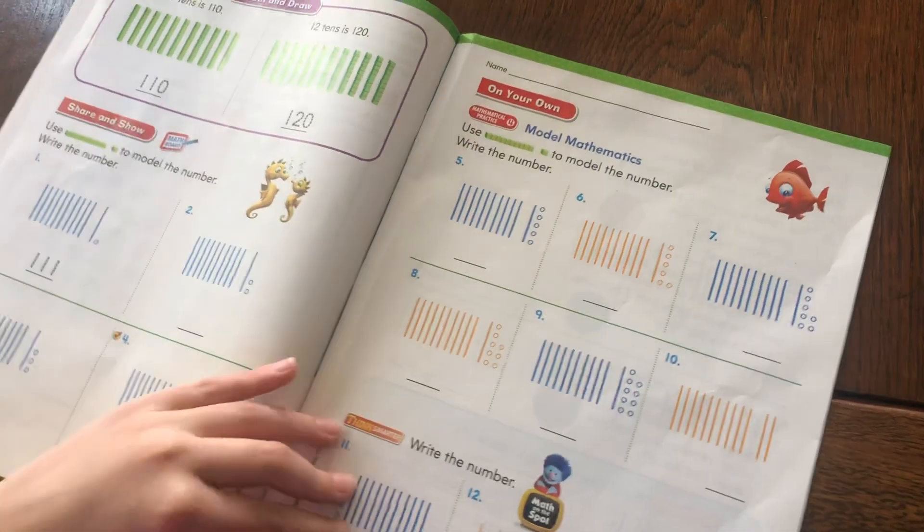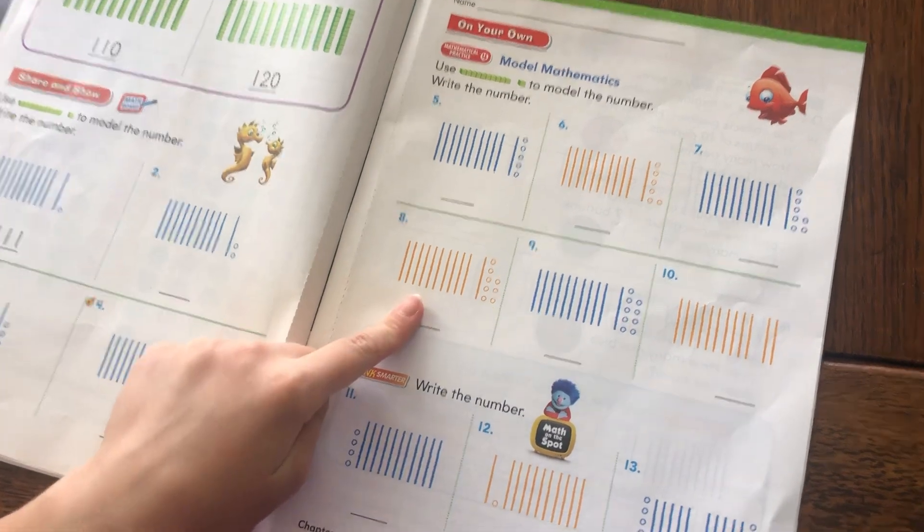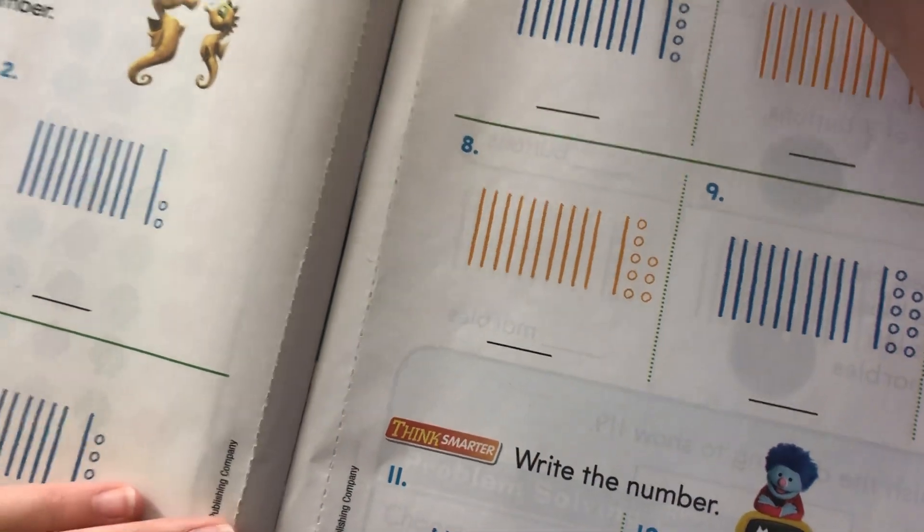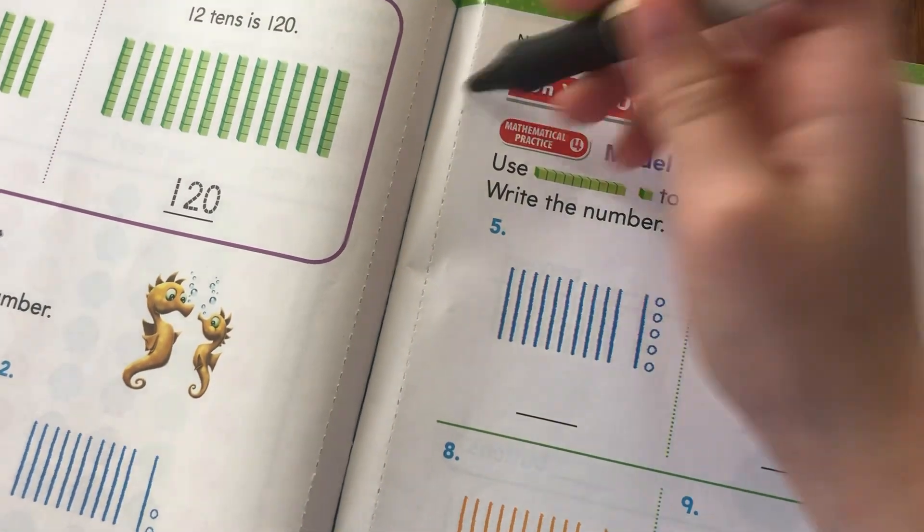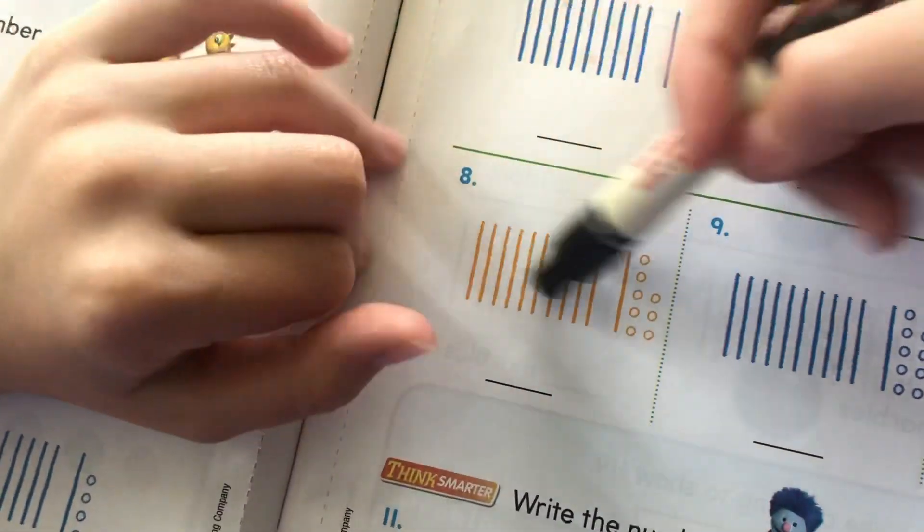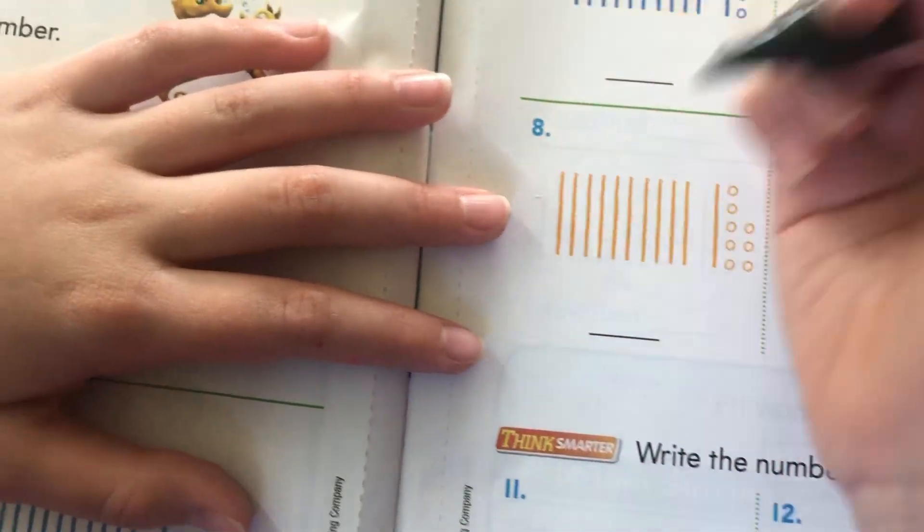Okay. And then, in the inside, which one of these should we do? How about number 8, right here? Okay. So, this says, use models, I mean, base 10 blocks to model the number, write the number. Well, I know that we just have the quick 10s and quick ones. So, let's just use this. So, let's count these. So, I know there's one line is 10. So, let's do that.